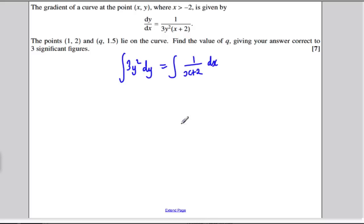Now, we integrate this here, add 1 to the power and divide, we simply get y cubed, and on the other side, it's ln x plus 2. We get a constant of integration on both sides, but I'm just going to write that as one combined constant, c.